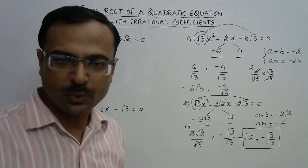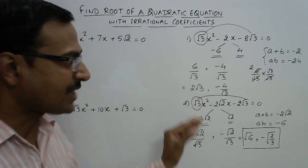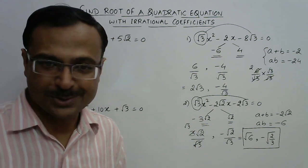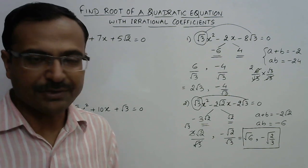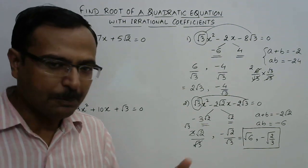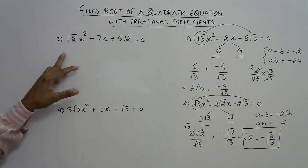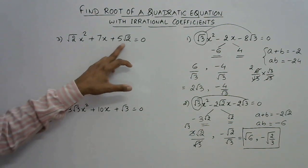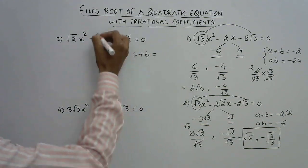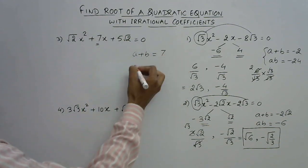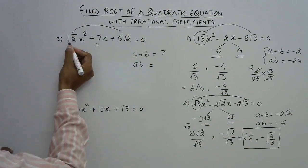Likewise you can solve many more such questions, which are also asked in competitions. This is very important for class 9 and class 10 students with the quadratic equations chapter. Let's see one more: √2x² + 7x + 5√2 = 0. We need two numbers whose sum is 7 and whose product is 5 × 2 = 10.